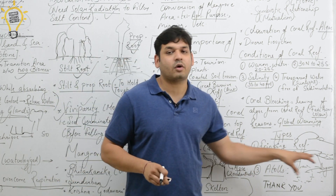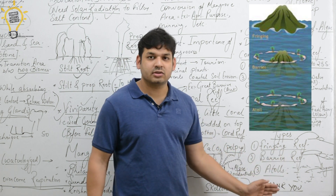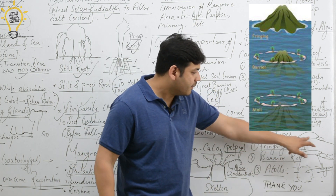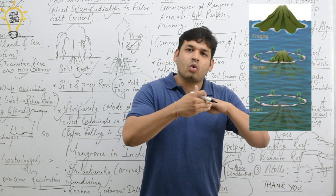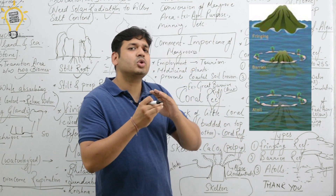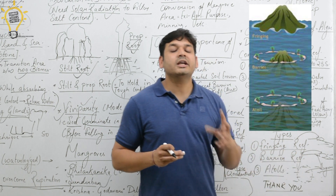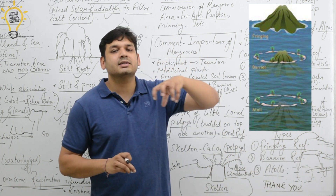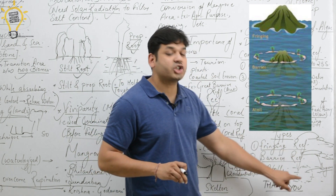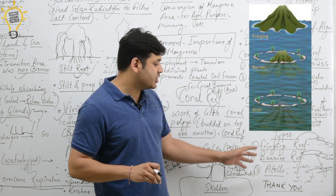Types of coral reefs: there are three types — fringing reefs, barrier reefs, and atolls. Fringing reefs are directly associated with the coastline, touching it. Barrier reefs are at a distance from the shoreline with water between them called a lagoon — for example, the Great Barrier Reef. Atolls are circular-shaped coral reefs found in the open sea, and the water cut off from the main sea inside them is also called a lagoon.